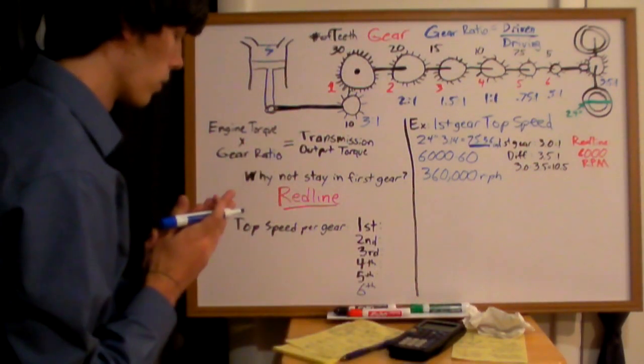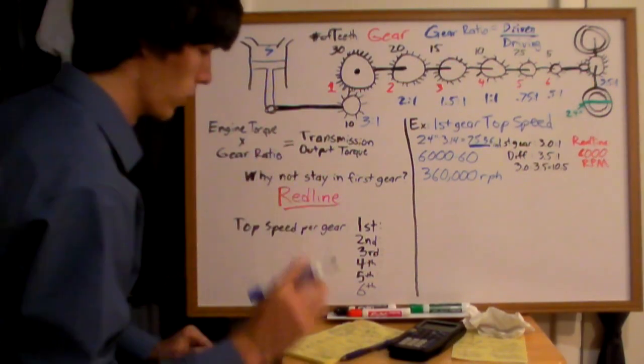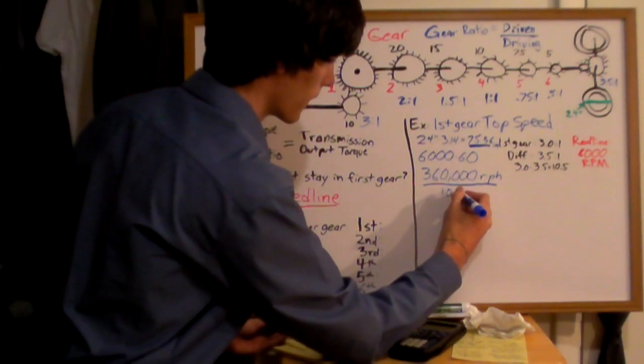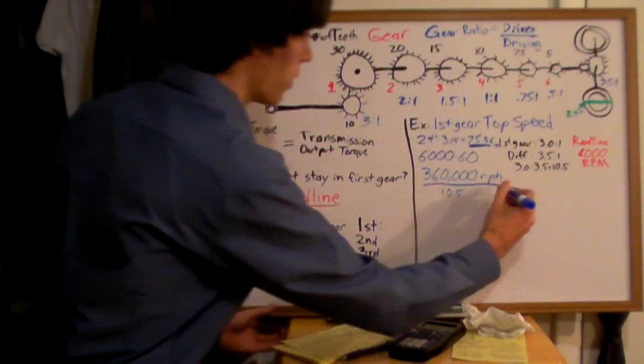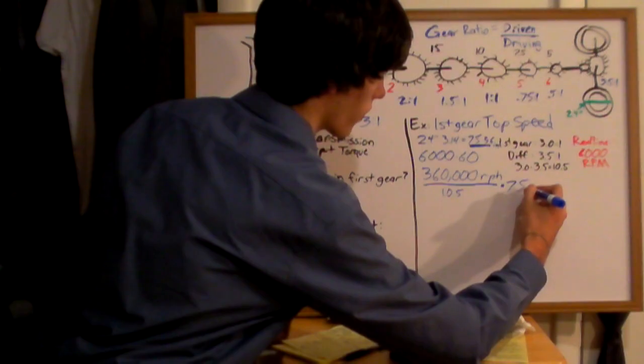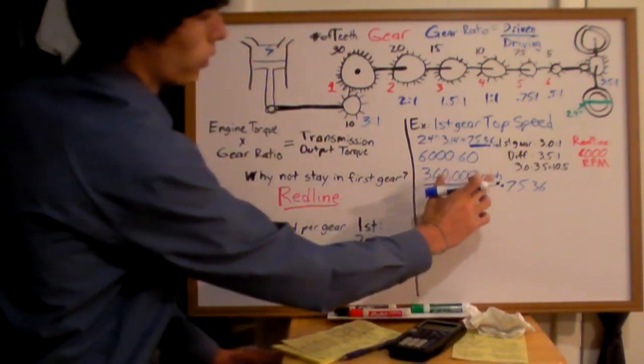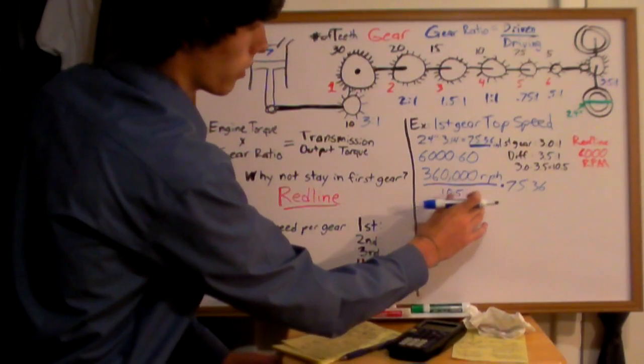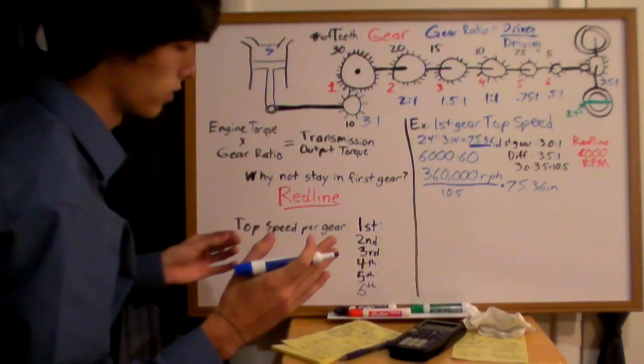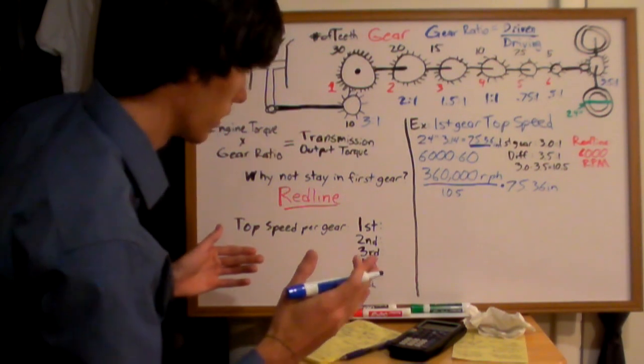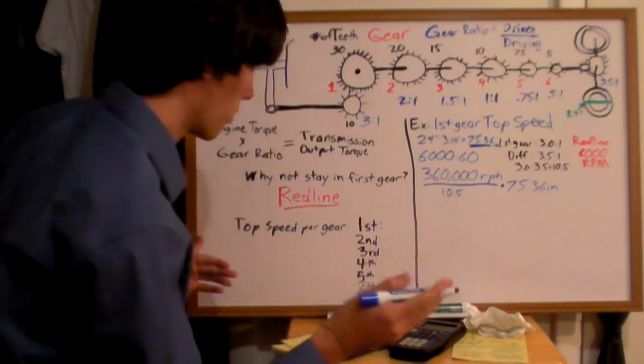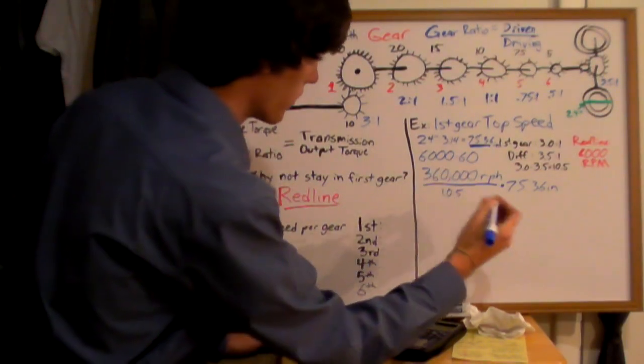Alright, from here we want to calculate how fast this is getting you. So we're going to want to divide by 10.5, that's going to be your gear ratio, and then we're going to multiply this by 75.36. And this number, so you're going to have a revolution per hour over your gear ratio times a distance. This is going to give you a speed in distance per hour, it's going to be inches per hour. Right, so once you divide all this out, you're going to have this in inches per hour.